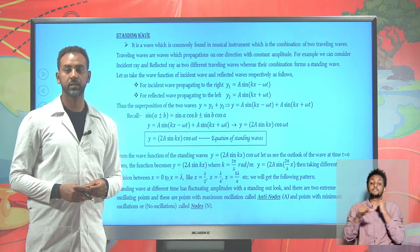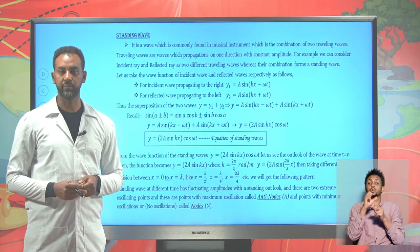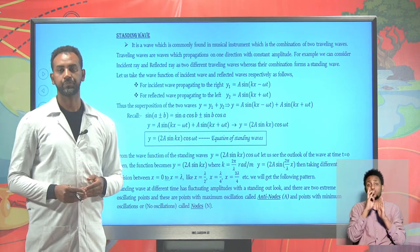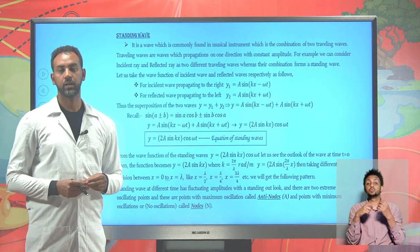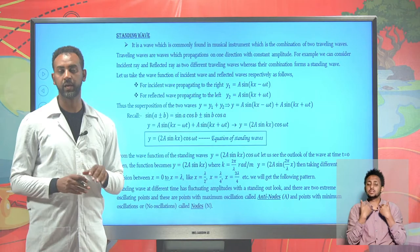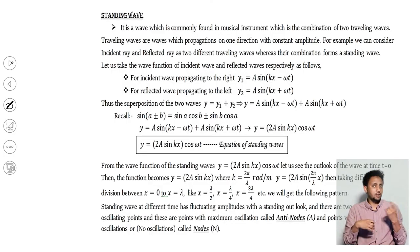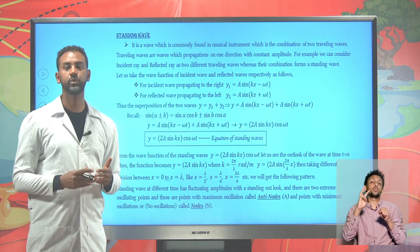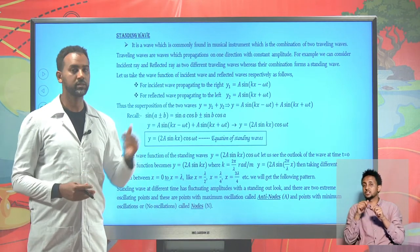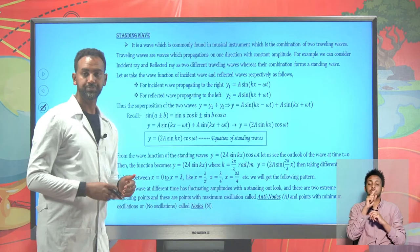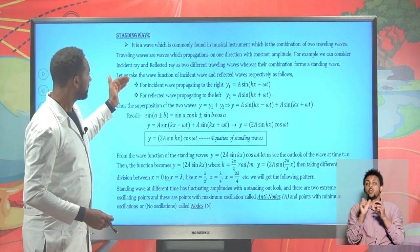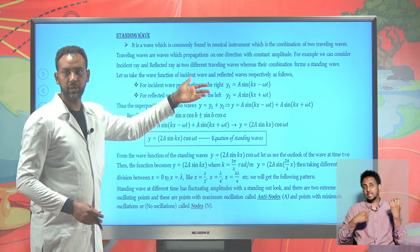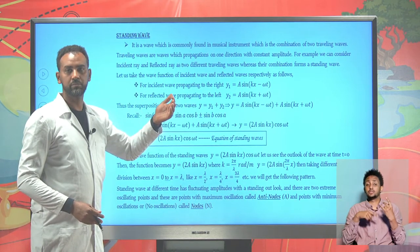Among the interference effects of waves, there is one known as a standing wave. A standing wave is the result of interference of two waves and is most commonly found in musical instruments. Every musical instrument, whether it's a piano, guitar, or any other instrument, uses a standing wave, which is a combination of an incident wave and a reflected wave that merge and interfere together to form a standing wave.